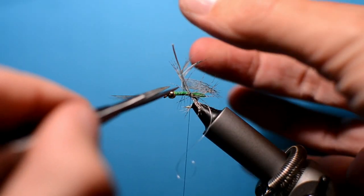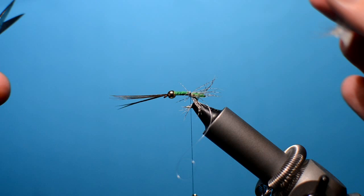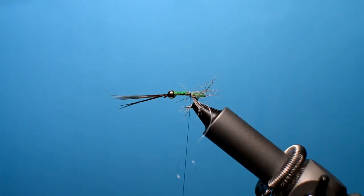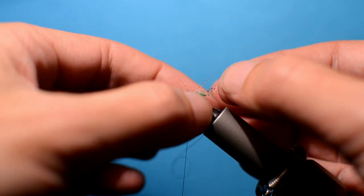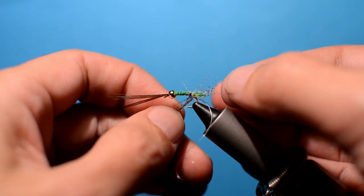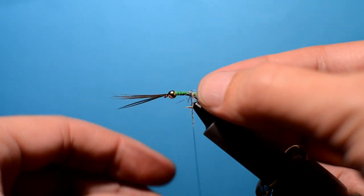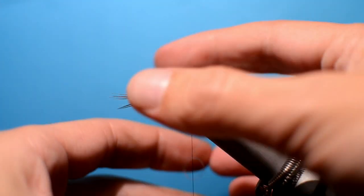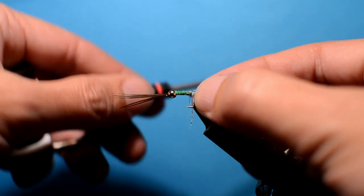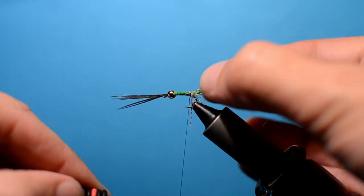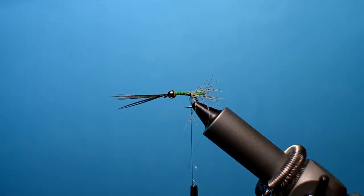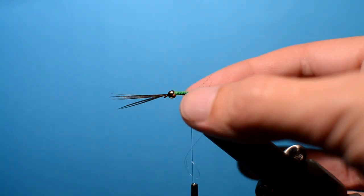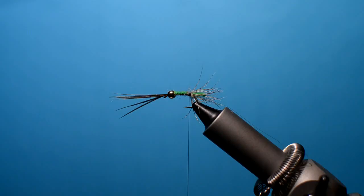We're going to take our scissors and just trim away the stem. I'm just going to pull all these fibers back. Take the thread around. Now what we want to do is just take our hare's mask.